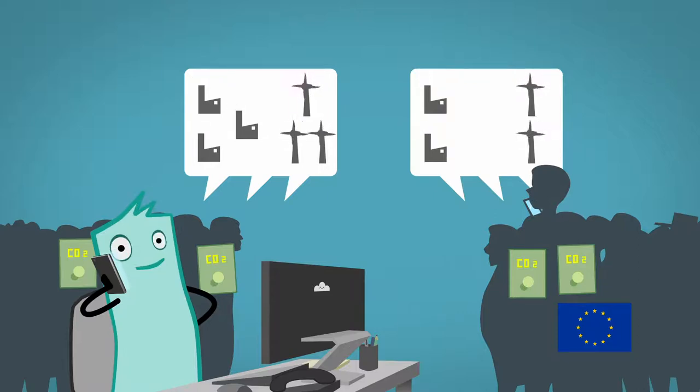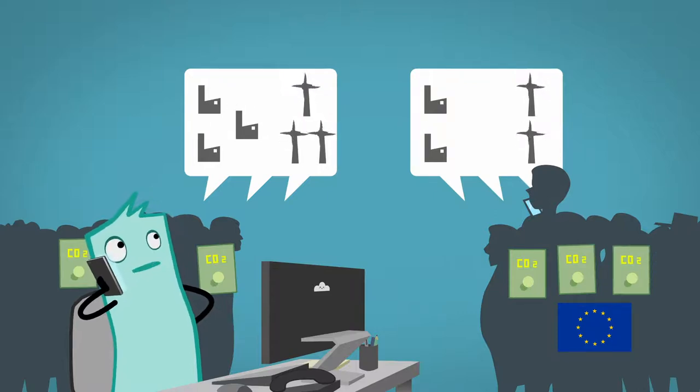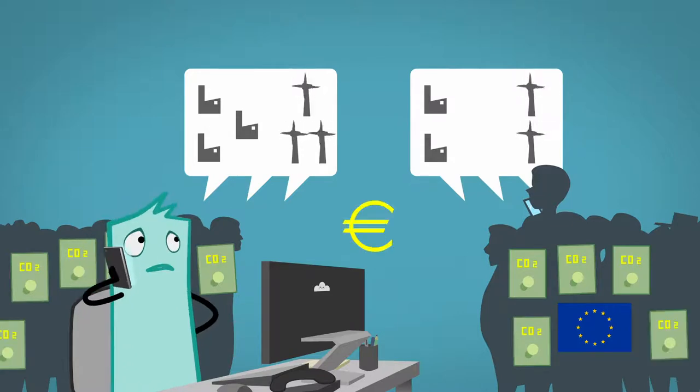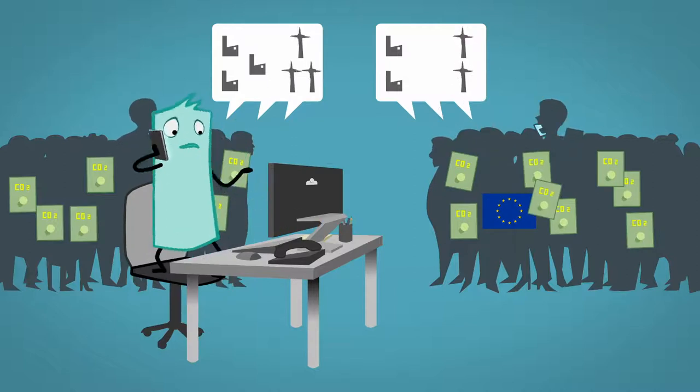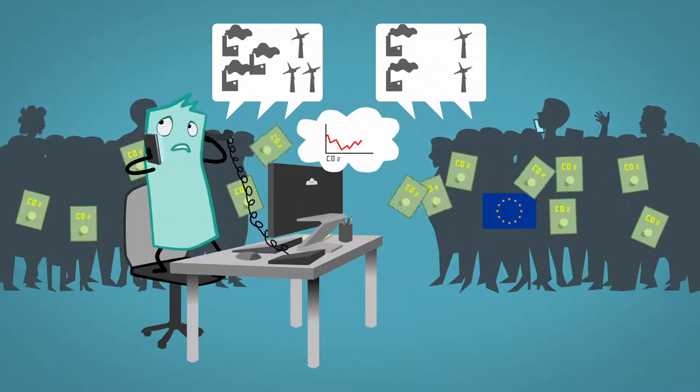The additional renewables, however, cause the demand for emission allowances to drop, which in turn causes their prices to drop as well. So the emission allowances are purchased by coal-fired power plants, allowing them to emit more CO2.